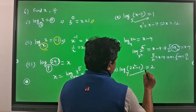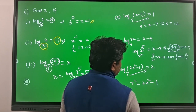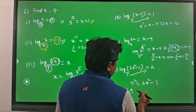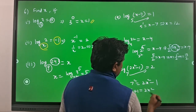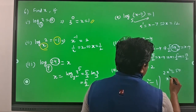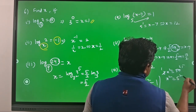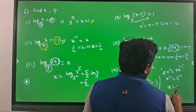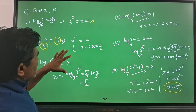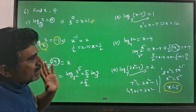For the last problem, convert to exponential form: 7 squared is equal to 2x squared minus 1. So 49 plus 1 equals 2x squared, giving 2x squared equals 50, so x squared equals 25, which can be written as 5 squared. Therefore x is equal to 5. So everywhere we are just converting logarithm into exponential form or exponent into logarithmic form and then doing algebraic operations to get the answers.